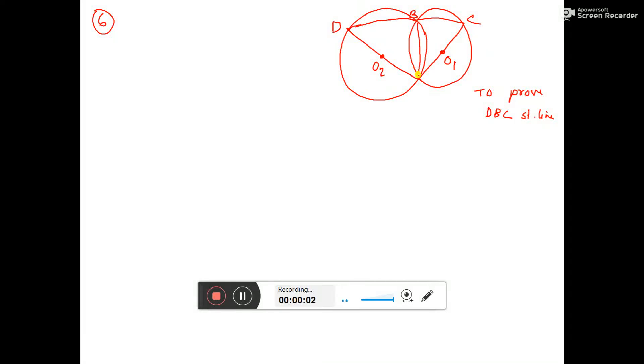This is the diagram given. We have to prove that DBC is a straight line.